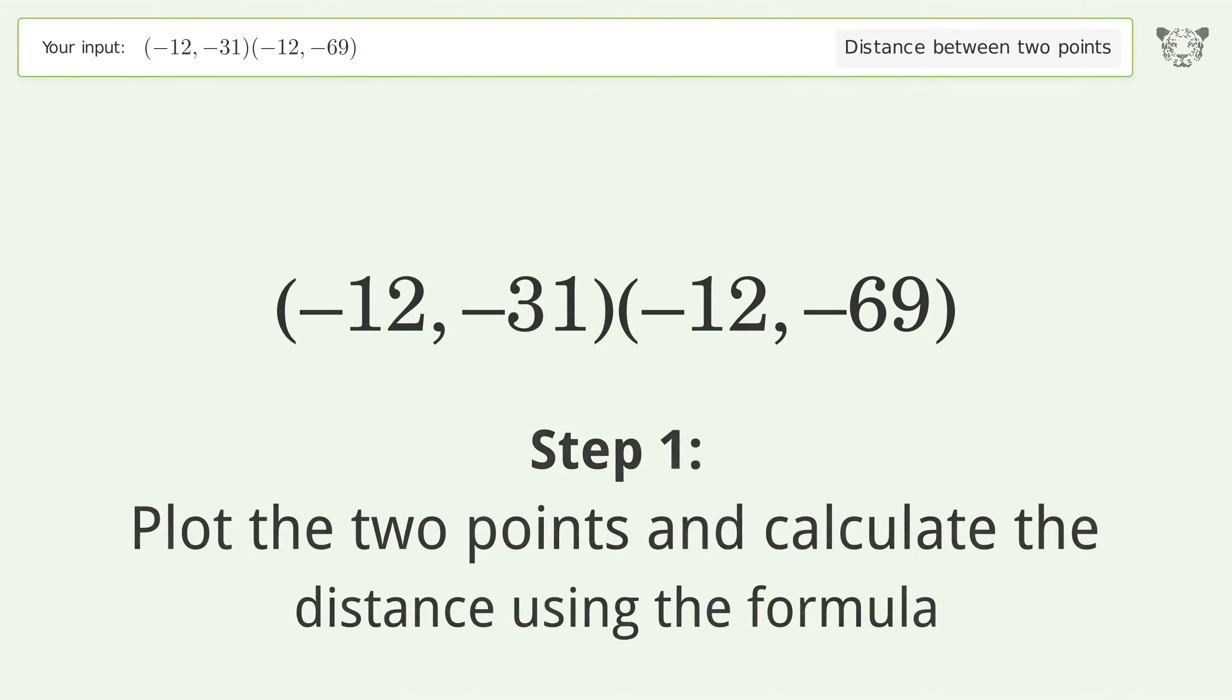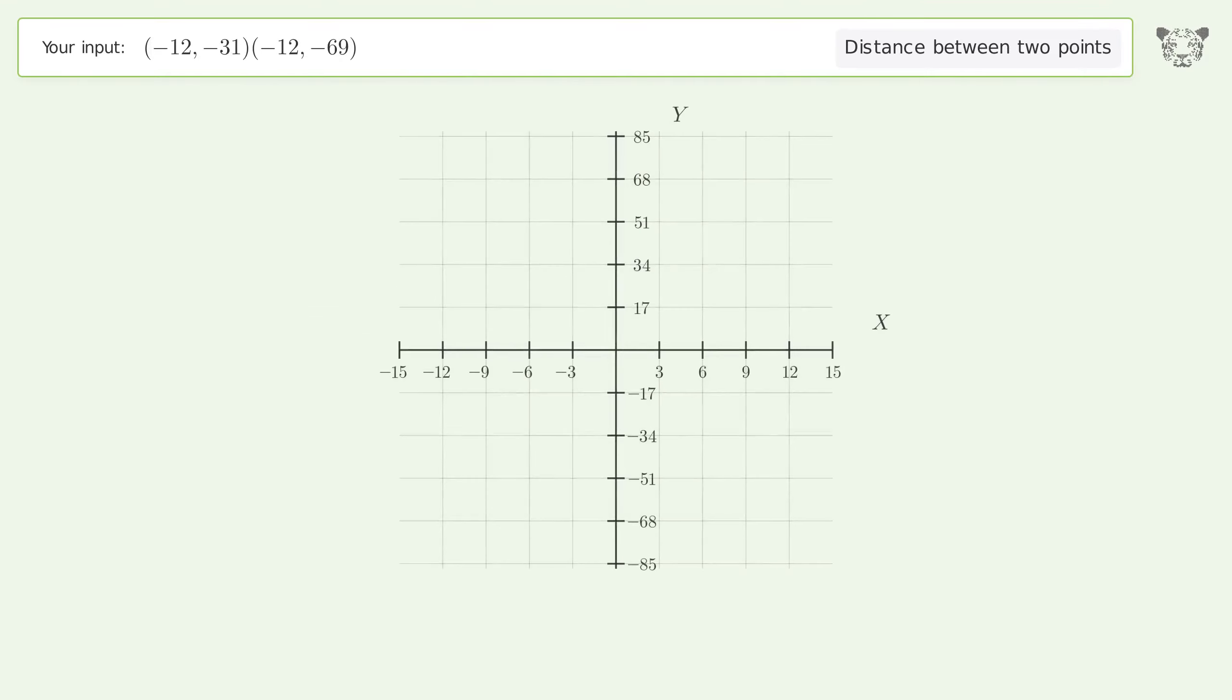Plot the two points and calculate the distance using the formula. The coordinates of point one are x1 equals negative 12 and y1 equals negative 31. The coordinates of point two are x2 equals negative 12 and y2 equals negative 69. d is the distance between the two points.